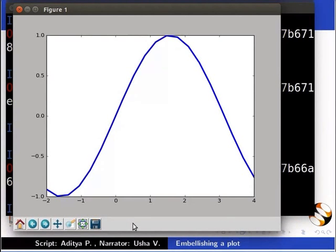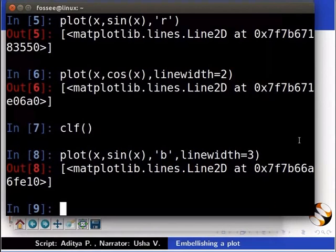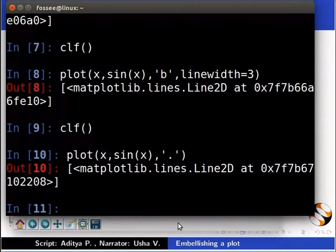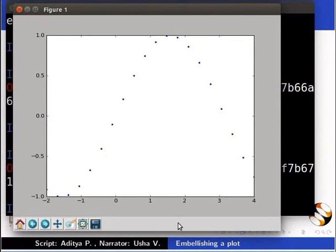To get the plot in dotted style, instead of a solid style, put a dot in line style. First, type clf to clear the plot window. Now type plot inside the brackets x comma sin x comma inside inverted commas dot. We get the sine curve in dotted style.